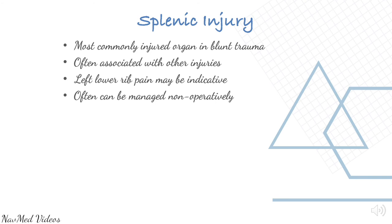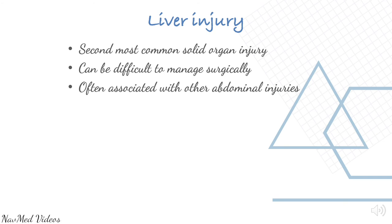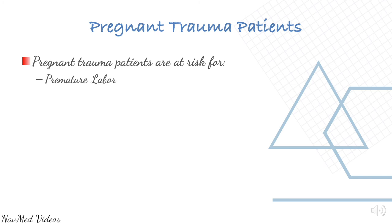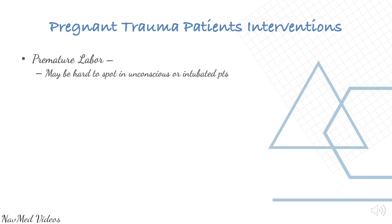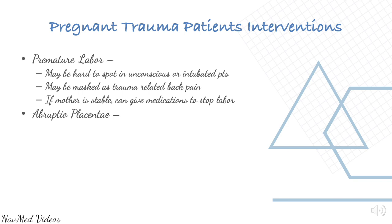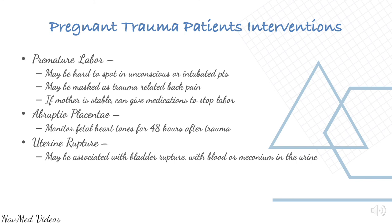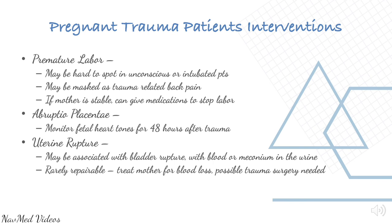Liver injury is the second most common solid organ injury in trauma. It can be difficult to manage surgically and is often associated with other abdominal injuries. Pregnant trauma patients are at risk for premature labour, abruption, and uterine rupture. Premature labour may be masked as trauma-related back pain, especially in unconscious or intubated patients. If the mother is stable, medications can be given to stop labour. If there is abruption, monitor fetal heart rate for at least 48 hours. Uterine rupture may be associated with bladder rupture with blood or meconium in the urine — treat the mother for blood loss and possible trauma surgery.